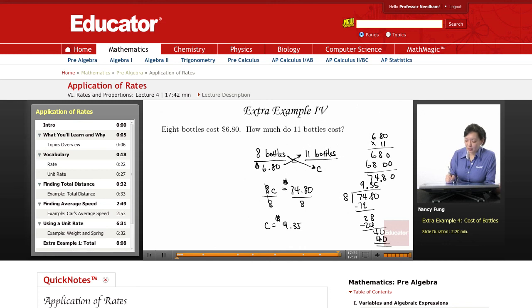If you had stopped around $74.80, you would come back to your answer and see that that wouldn't make sense because 8 bottles costing $6.80 would not make such a huge jump to $74.80 for 11 bottles.